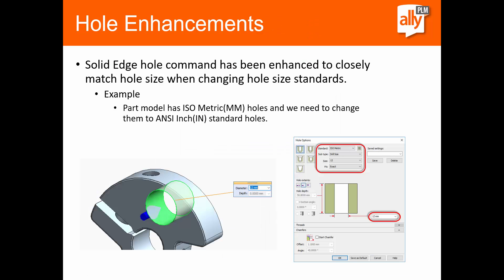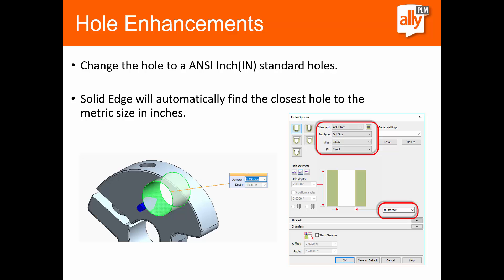With the hole command, we had a couple of enhancements. The big thing is that when you select and edit a hole and want to change the hole type — maybe from an ISO to an ANSI hole — in the past it would switch to the default setting of the other standard, which would usually be a really small hole. Now what we do is try to closely match the existing hole you already have in your model and convert it into the other standard. So a 12 millimeter hole turns to a 0.46 inch size hole, which closely matches the units from the other standard.